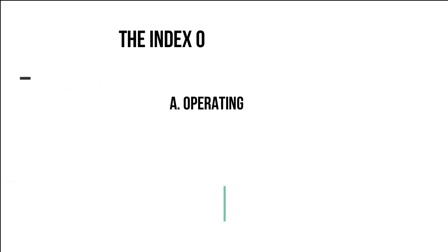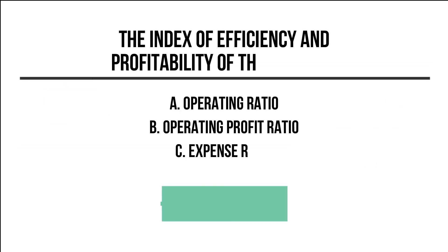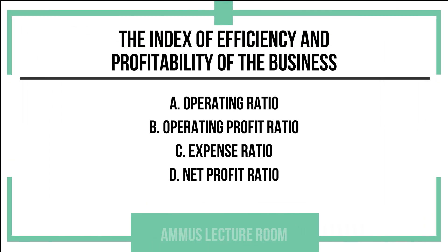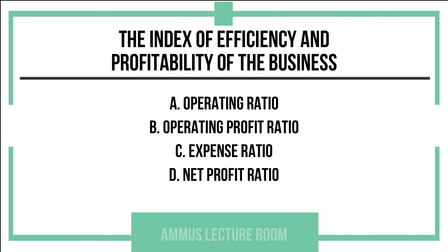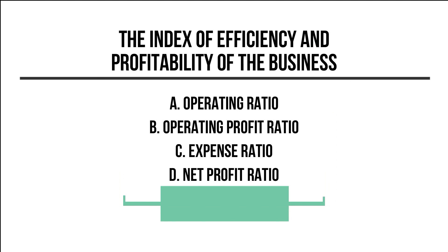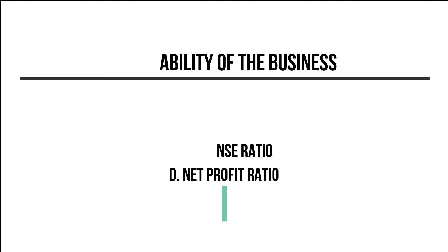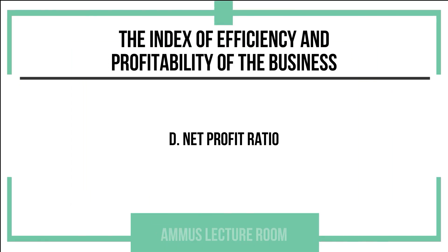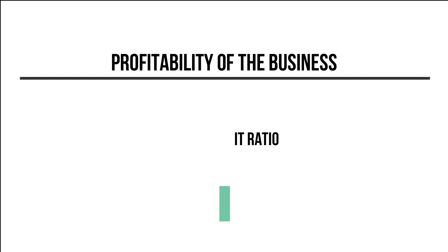The index of efficiency and profitability of the business. Option A: operating ratio. Option B: operating profit ratio. Option C: expense ratio. Option D: net profit ratio. The answer to this question is net profit ratio.